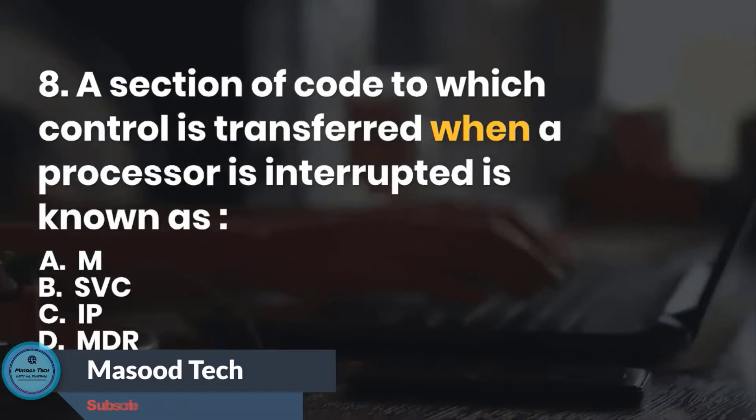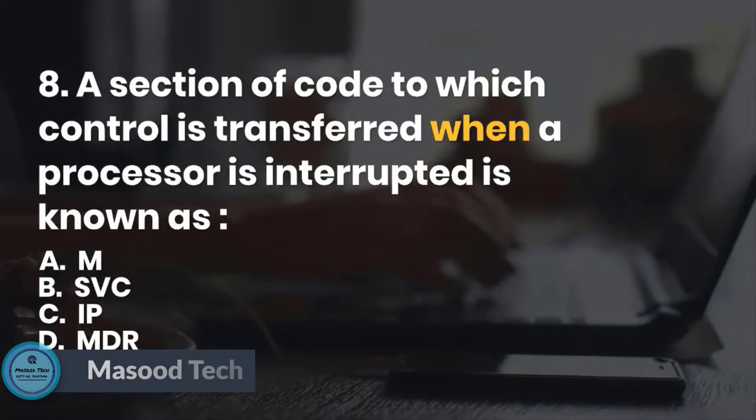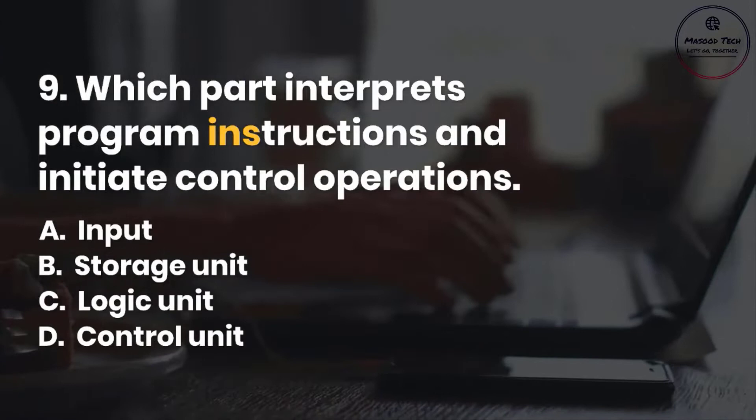Number 9. Which part interprets program instructions and initiates control operations? A. Input. B. Storage unit. C. Logic unit. D. Control unit. Correct answer is D.